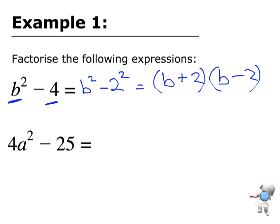We do the same thing with the next one. Now I've got a 4a squared, and just think, well what is 4a squared? Well that is 2a all squared, minus 25 is 5 squared.